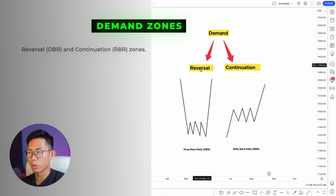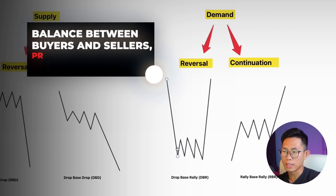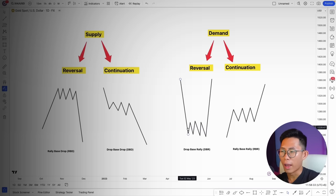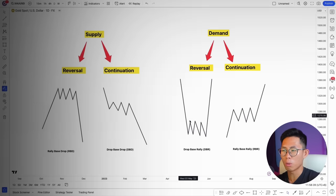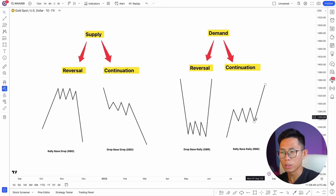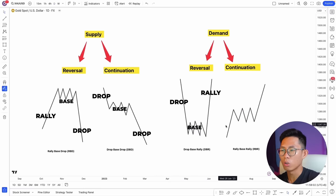For demand zones, the reversal type is when price drops, starts consolidating as buyers and sellers balance out, and then eventually breaks out of consolidation and reverses into an uptrend — this is called drop-base-rally. The continuation type is when price is in an uptrend, pushes up, consolidates, then breaks out and pushes up further — that's a rally-base-rally. So the four patterns are: rally-base-drop, drop-base-drop, drop-base-rally, and rally-base-rally.